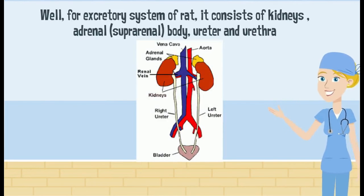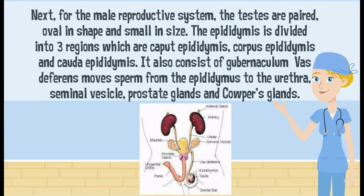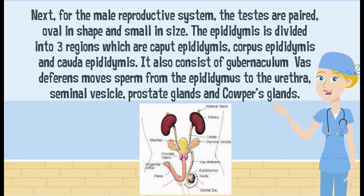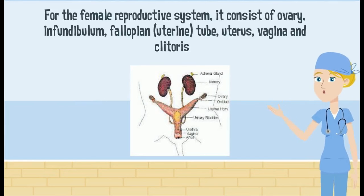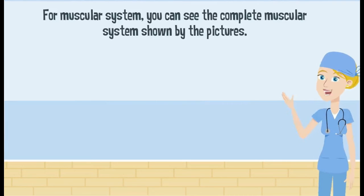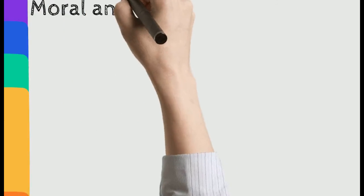The excretory system in rats consists of the kidneys, adrenal bodies, ureters, and urethra. For the male reproductive system, the testes are paired, oval in shape, and small in size. The epididymis is divided into three regions: the caput epididymis, corpus epididymis, and caudal epididymis. It also consists of the gubernaculum, vas deferens, seminal vesicles, prostate glands, and bulbourethral glands. For the female reproductive system, it consists of the ovary, infundibulum, fallopian tube, uterus, vagina, and clitoris.